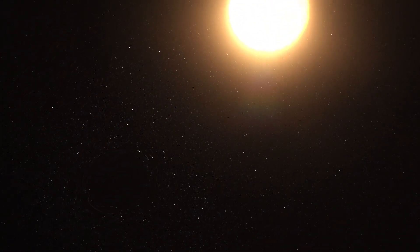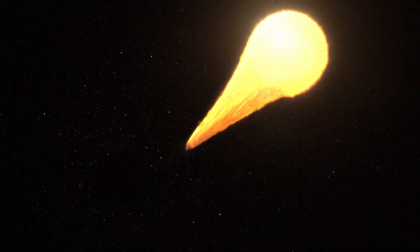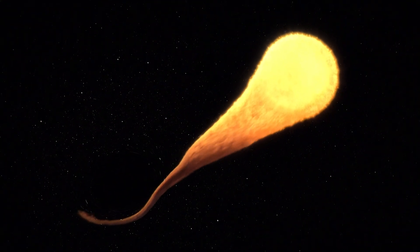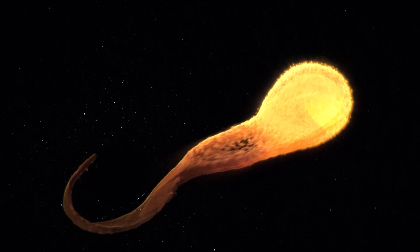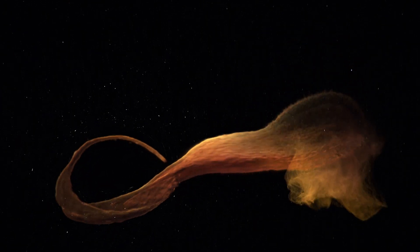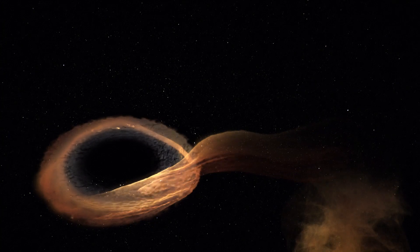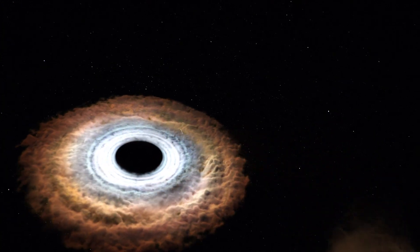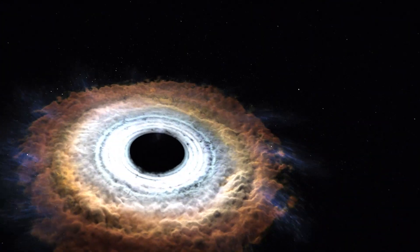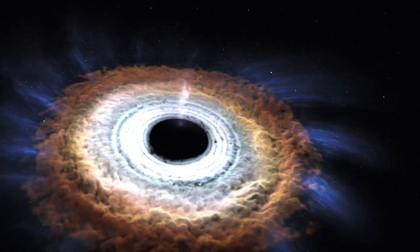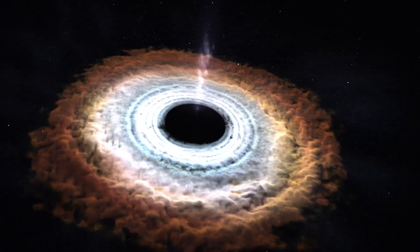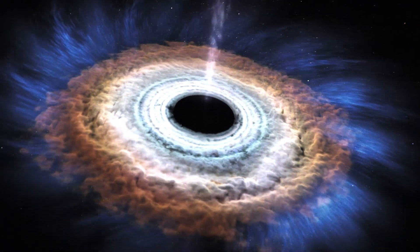And as stars get closer and closer to the center of the black hole, as it crosses over the event horizon, what will happen is that the material of these stars will get shredded apart, because the gravitational pull of a black hole is so strong that the material of the stars gets pulled apart.